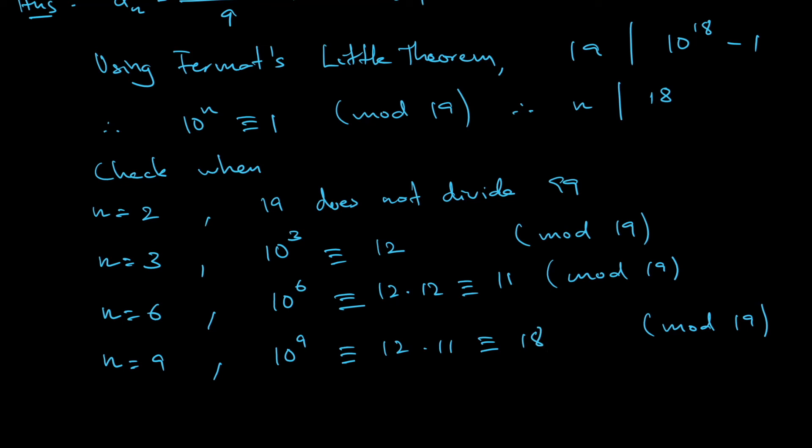That means you can check 18 actually works. 10^18 is basically (10^9)^2. Notice that this is -1 times -1, so it will go back to 1, so 18 works.